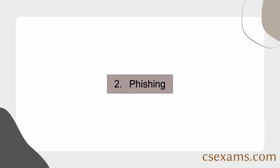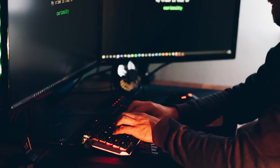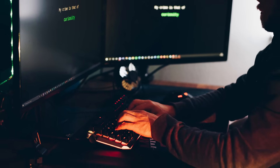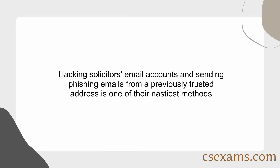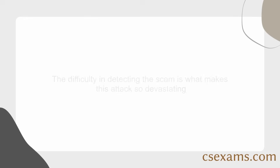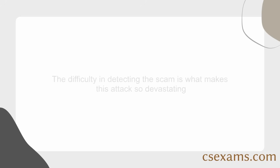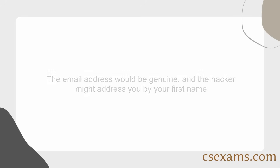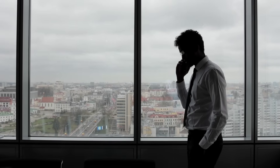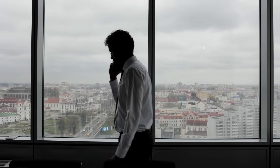Method 2: Phishing. Hackers have increased their efforts to deceive users into clicking their links as the public becomes more aware of phishing tactics. Hacking solicitors' email accounts and sending phishing emails from a previously trusted address is one of their nastiest methods. The difficulty in detecting this scam is what makes this attack so devastating. The email address would be genuine, and the hacker might address you by your first name. This is exactly how an unlucky home buyer wasted £67,000 despite responding to a previously legitimate email address.